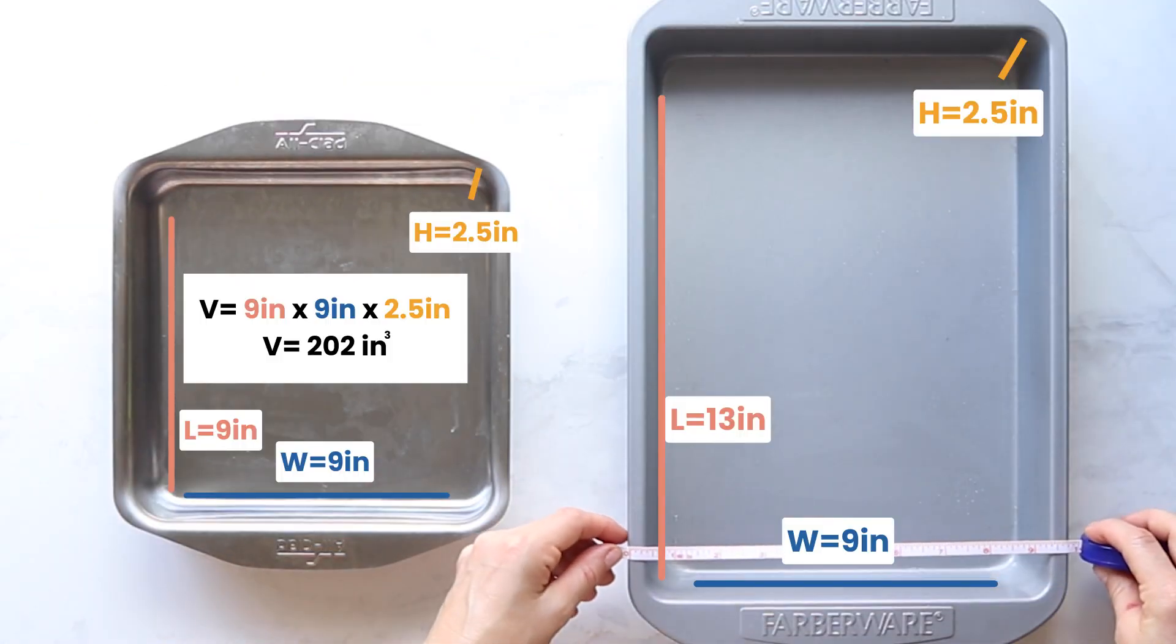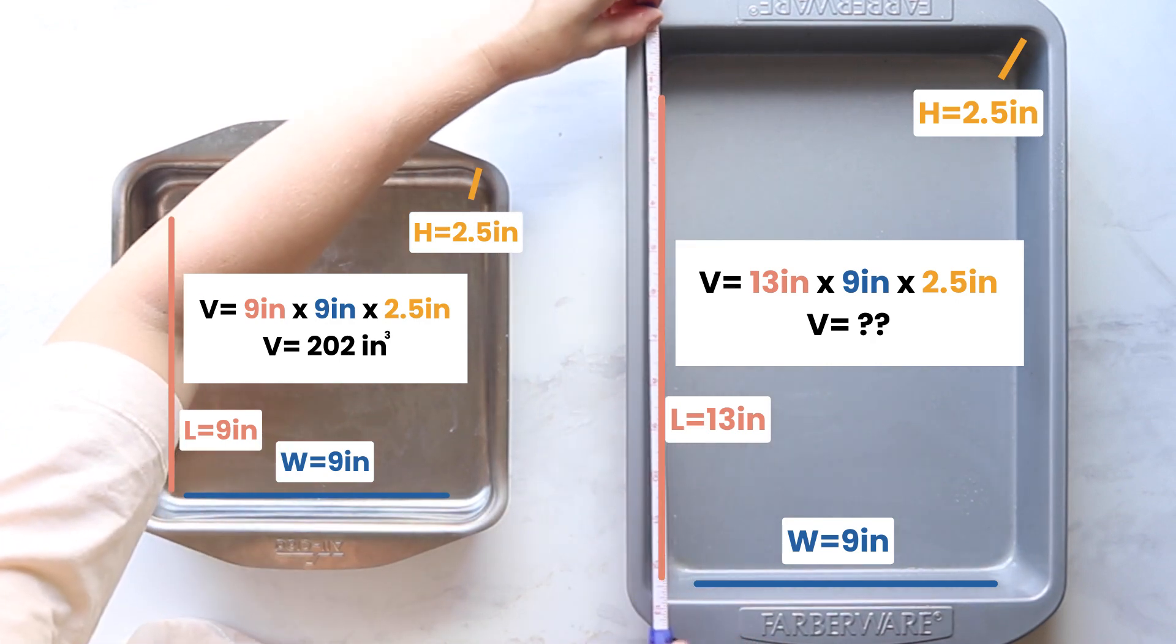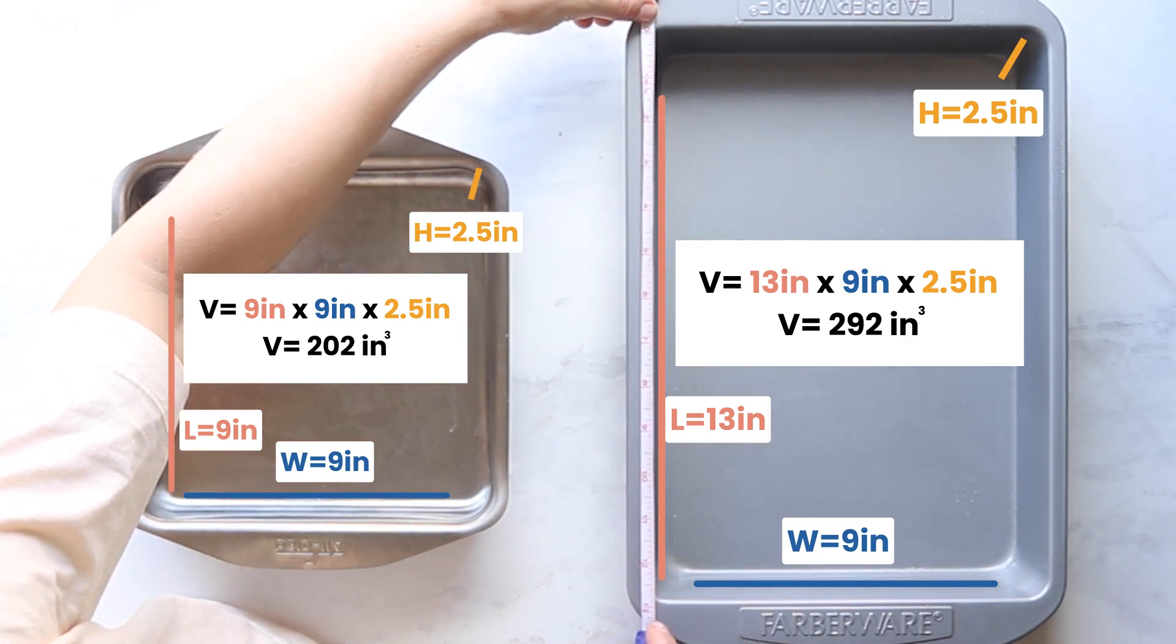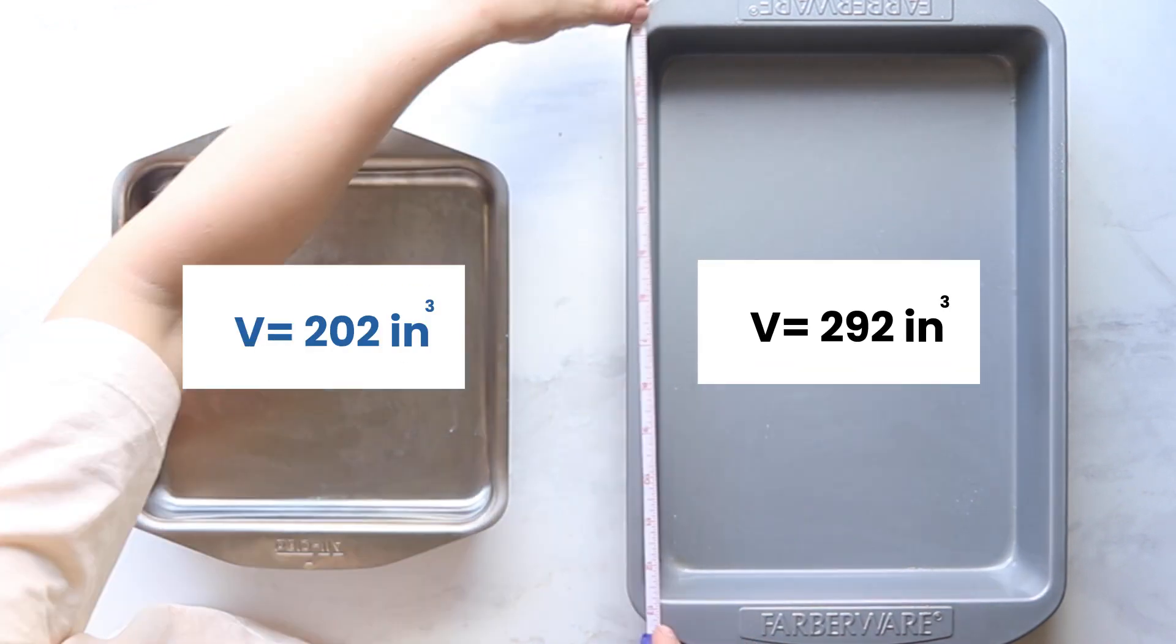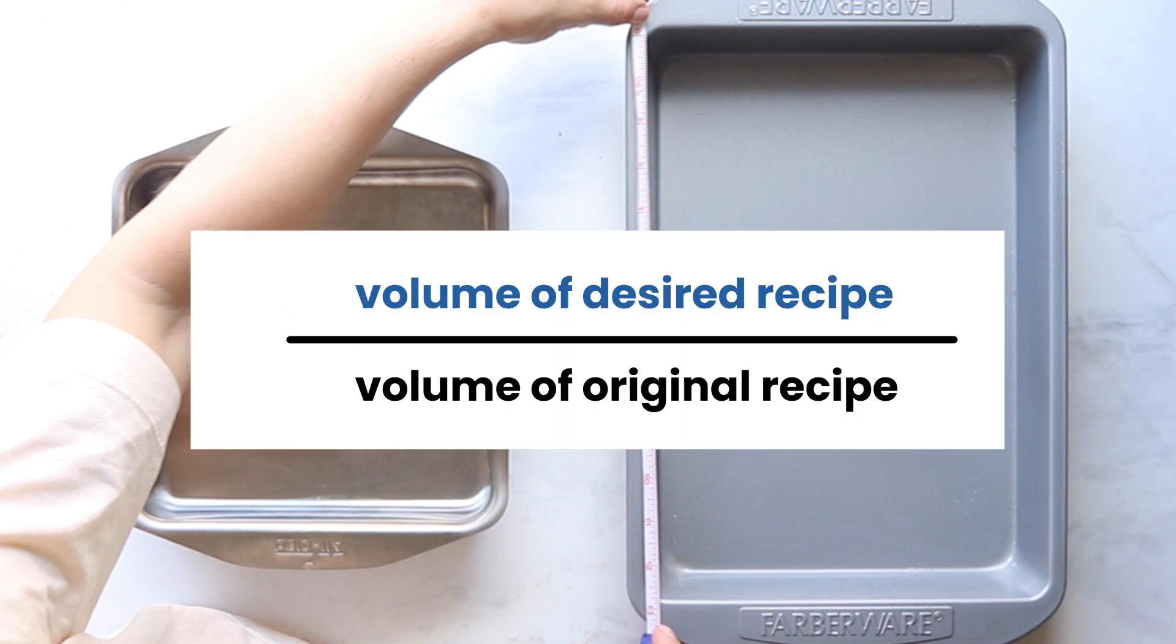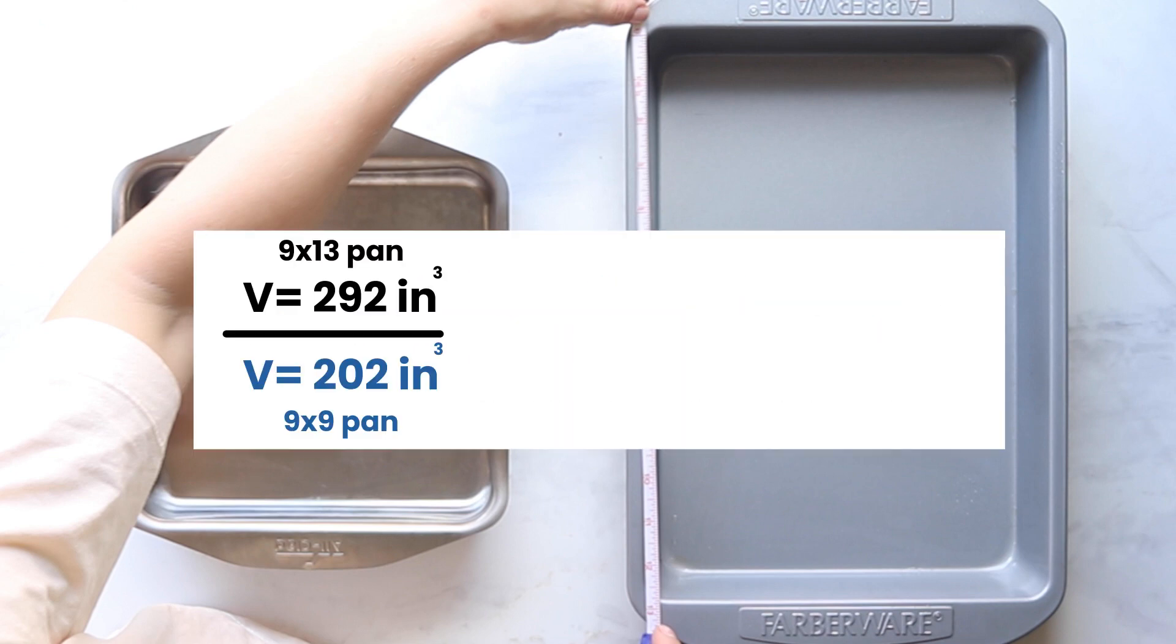Once you have the volume of the original pan, you're going to get the volume of the pan you want to bake in and convert it to, like this nine by 13 pan, and then you're going to compare the volume. Then we'll make a fraction of the volume of the recipe we want to bake in over the volume of the original recipe. So the nine by 13 pan volume over the nine by nine pan volume,